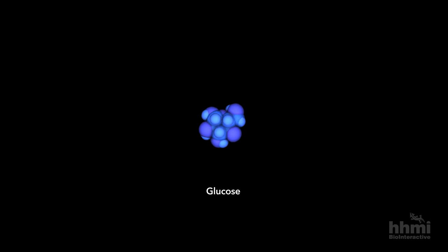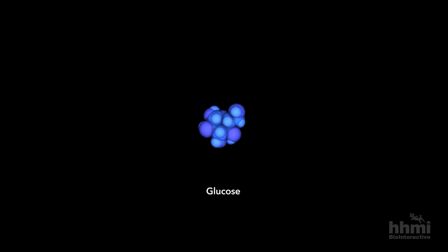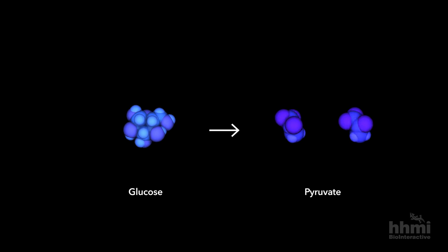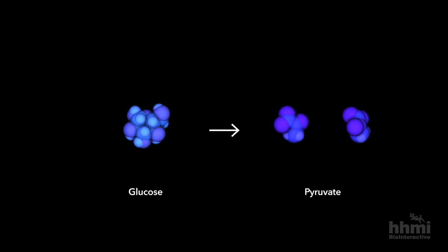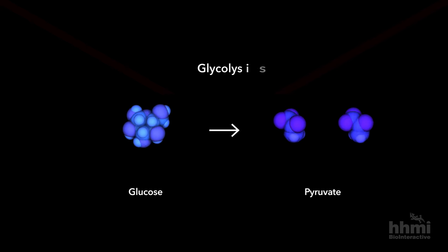The sweet, energetic glucose molecule is the energy source providing power for your living cells. Glucose, from the food you eat, is slowly broken down into two pyruvate molecules, extracting energy in a sequence of enzyme reactions called glycolysis.